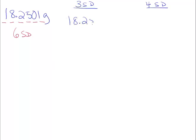So 18.2501 — we're going to need to keep three digits: 1, 2, 3. We'll put a barrier here and look at the next number. We can see that it equals 5, and our rule is that when it's equal to five, the next value we keep gets rounded up. So our answer rounded to three significant digits is 18.3 grams.